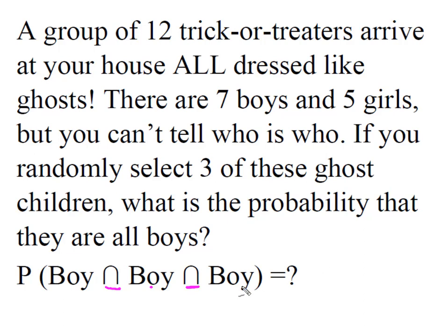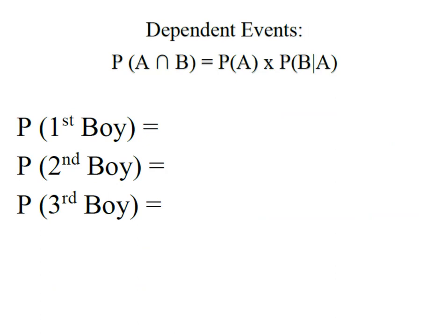These are dependent events. When I go to select the first child, the probability that I get a boy is going to be 7 out of 12, because there were seven boys in my group of trick-or-treaters. Now I've selected him, and when I go to select the second boy, there are only six boys available and only 11 children from which to choose.